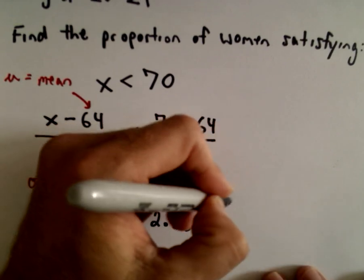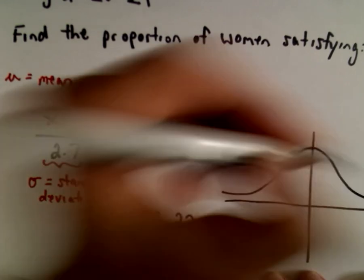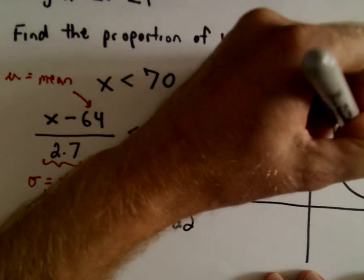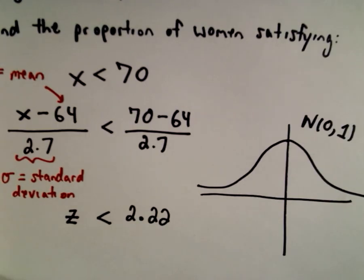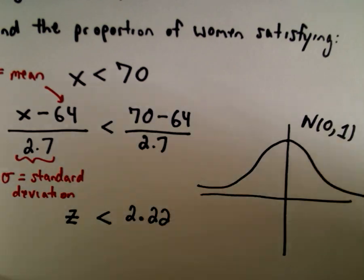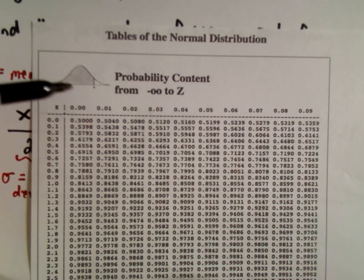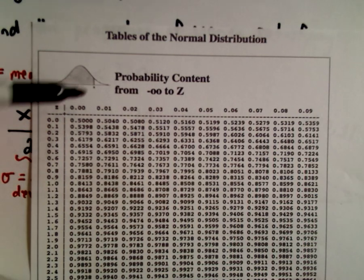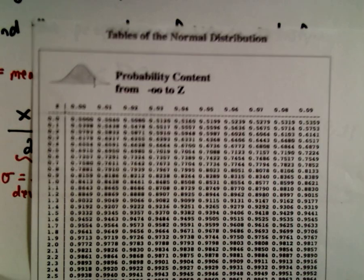We have this normal distribution with mean of 0 and standard deviation of 1. Depending on the table you use, different tables are set up differently. In this case, when we read off our z-score, it's going to tell us the area underneath the curve to the left of that z-score, and that corresponds to the probability.